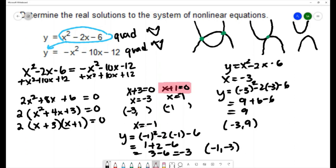We've got our two solutions to the system of nonlinear equations being negative 3, 9 and negative 1, negative 3.